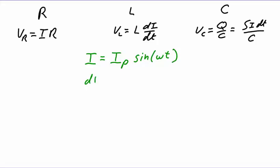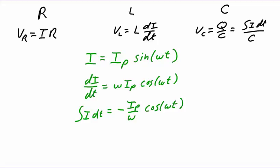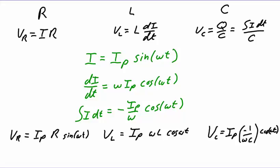We can see immediately the time derivative and integral of this function. When we take the derivative, the derivative of sine is cosine, and the chain rule brings out an omega. When we perform the integral, we get negative cosine and a 1 over omega. Putting these expressions into our previous three, each expression equals a current times a quantity in ohms times an oscillator: for the resistor, current times R with a sine; for an inductor, current times omega L with a cosine; for a capacitor, current times 1 over omega C with a cosine.